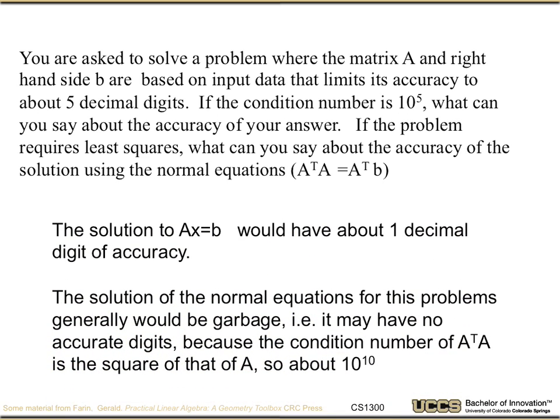Since the decimal digits are around what you expect to lose, the solution to AX equals B would have at best one decimal digit of accuracy. It might have none. It depends on really how close you are to the 10 to the fifth. We lose about as many digits of accuracy as we have power in our condition number.